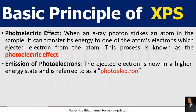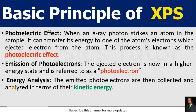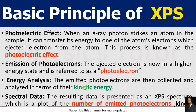The second principle is the emission of photoelectrons. When electrons absorb energy given by X-rays, those electrons are known as photoelectrons. The ejected electron is in a higher energy state and is referred to as a photoelectron. Third, energy analysis is performed — the emitted photoelectrons are collected and analyzed in terms of their kinetic energy. From this, a spectrum is formed, plotted as the number of emitted photoelectrons, where each peak corresponds to a specific element and chemical state of the sample.